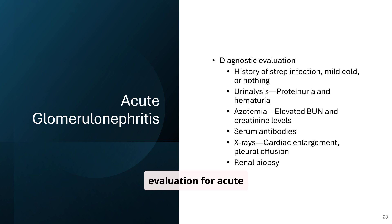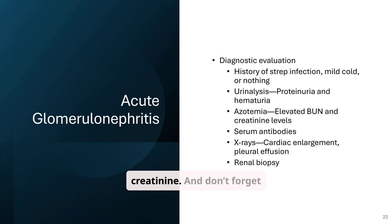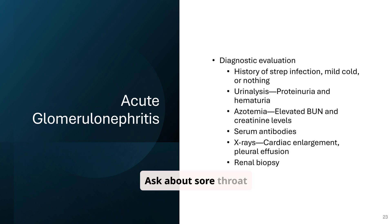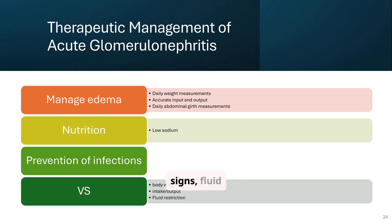Diagnostic evaluation for acute glomerulonephritis includes a history of strep infection, urinalysis, and blood tests. You'll likely see hematuria and proteinuria in the urine. Blood work may show elevated BUN and creatinine. Don't forget the ASO titer — it can confirm a recent strep infection. Ask about sore throat one to two weeks before symptoms started. Managing acute glomerulonephritis involves addressing edema, providing appropriate nutrition, and preventing infections. Careful monitoring of vital signs, fluid balance, and body weight is essential. Limit sodium and protein, and consider antihypertensives or diuretics if needed.